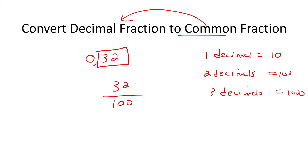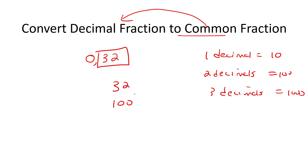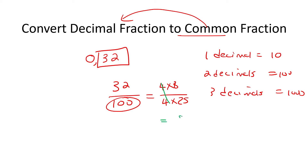So for example, I know that the number four can go into both of these. Because I know that I could write 32 as four times eight, and I could write a hundred as four times 25. And so these fours can cancel, and so you'd be left with an answer of eight over 25.